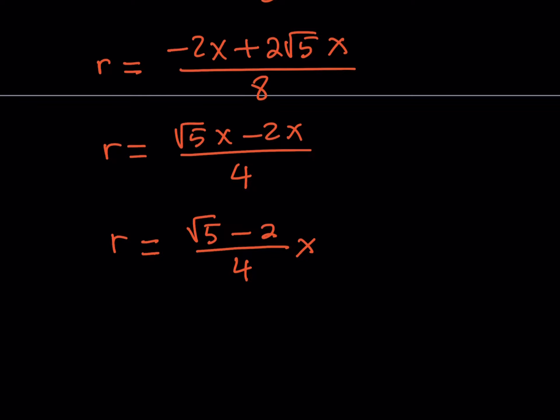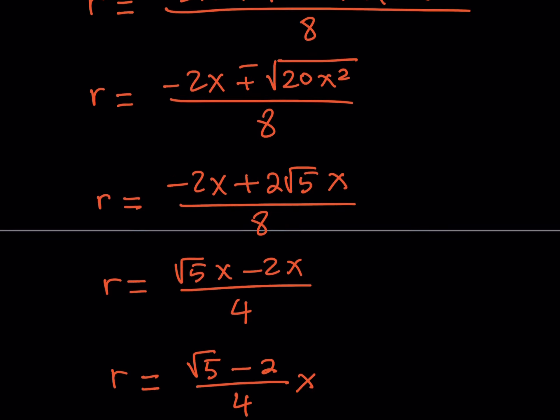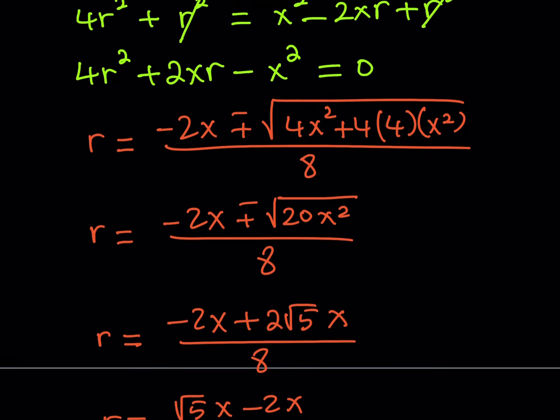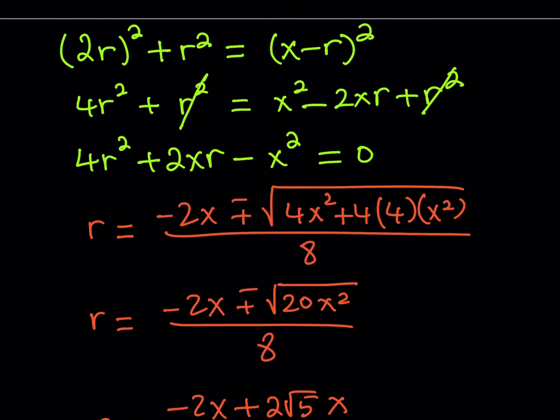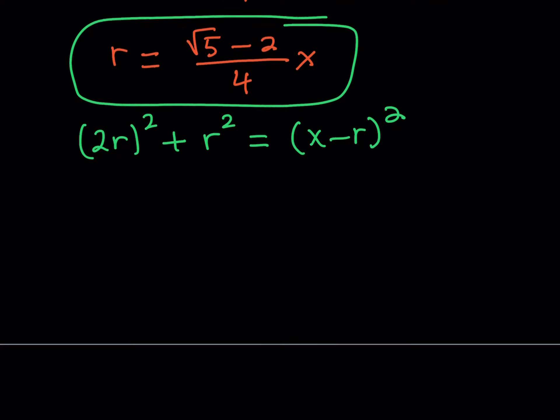Before we finish, I'd like to give you another perspective. If you remember, we did get an equation here. 2r quantity squared plus r squared equals x minus r squared. Let's take that equation and write it down here.